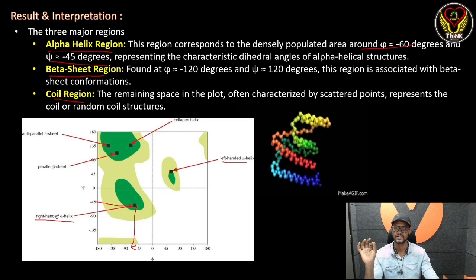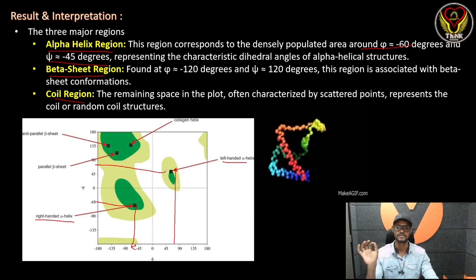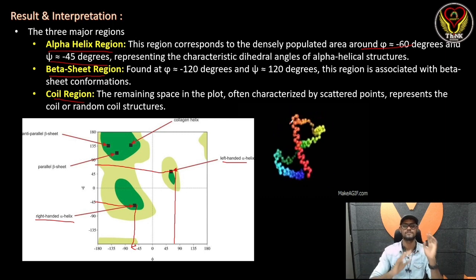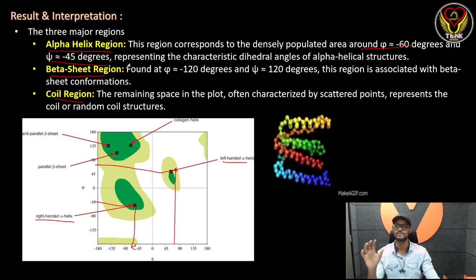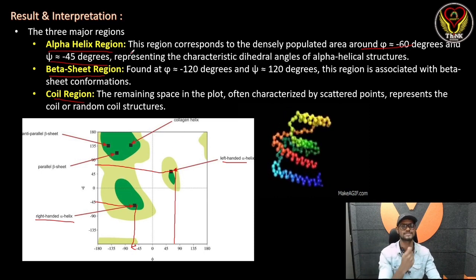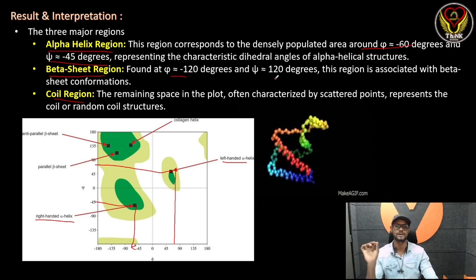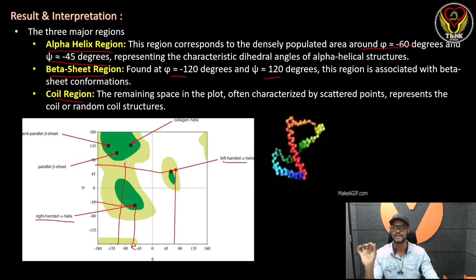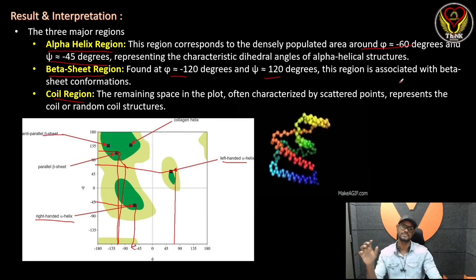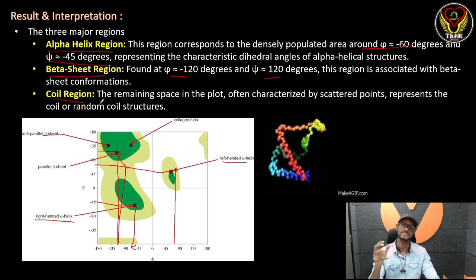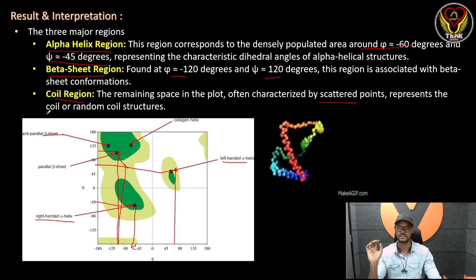We are using the right-handed alpha helix. For the left-handed alpha helix, we use the other point on the plot — approximately phi +60 and psi +45. In that region, we say the left-handed alpha helix is a secondary structure. For the beta sheet, the psi angle is approximately -120 and the phi angle is approximately +120. The remaining space in the plot, often characterized by scattered points, represents the coil or random coil structure.